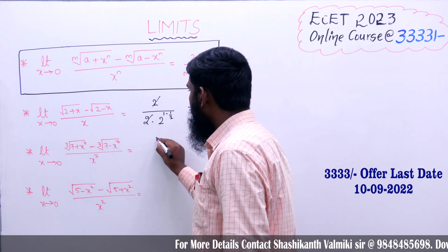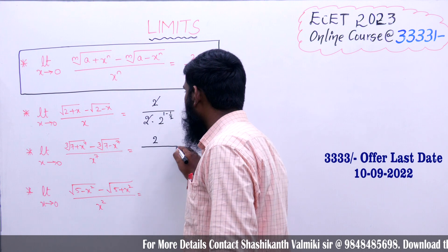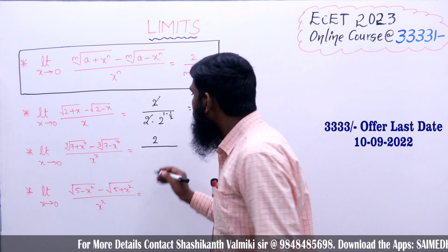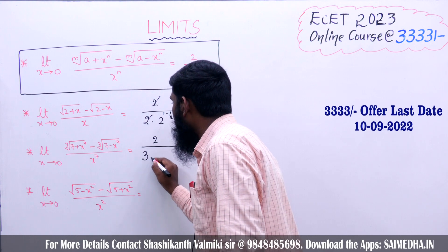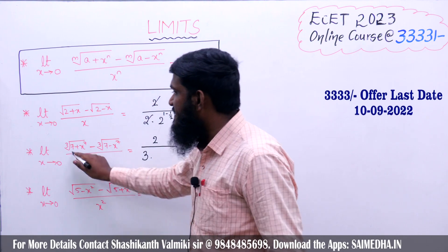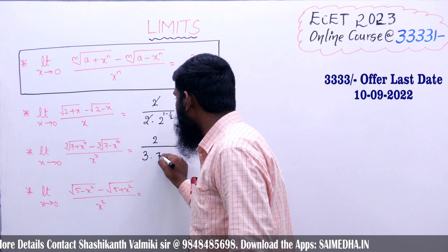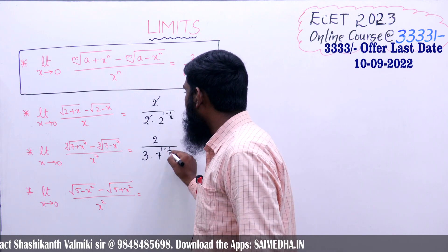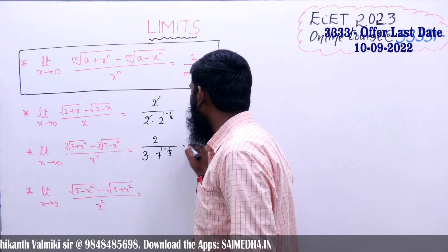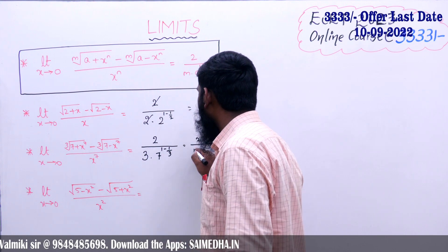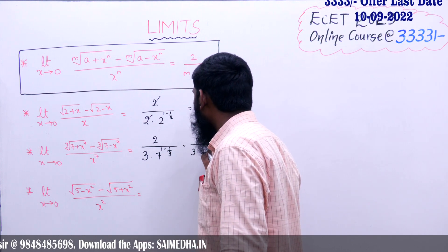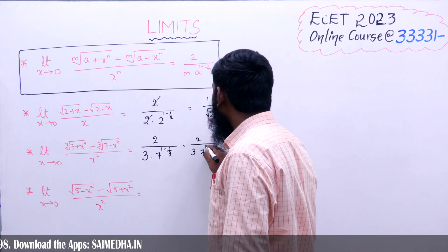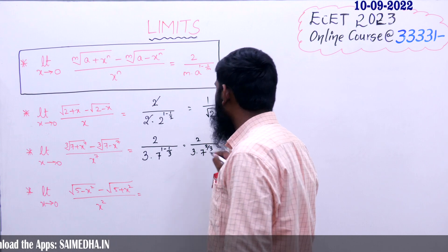Now let us apply the formula. We write 2 divided by m — here m equals 3 since it is a cube root — into a to the power of (1 minus 1 by m). a equals 7 and m equals 3, so this becomes 2 divided by 3, into 7 to the power of (1 minus 1/3), which is 7 to the power of 2/3. That is the answer.